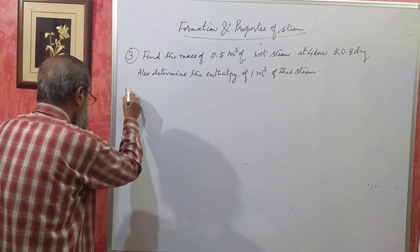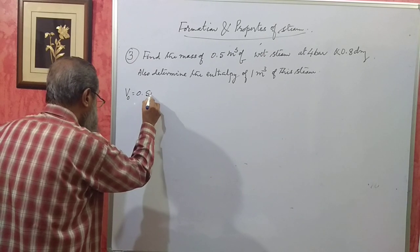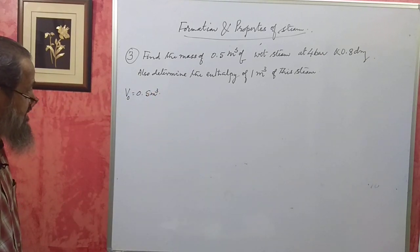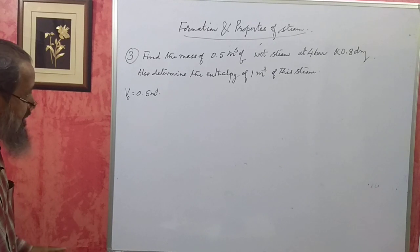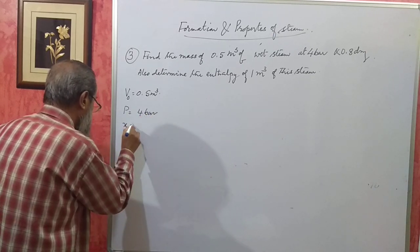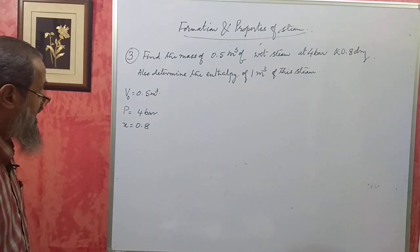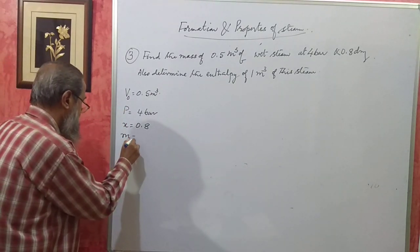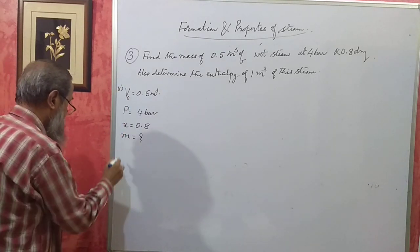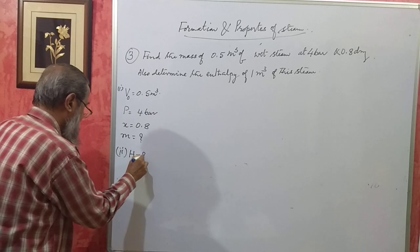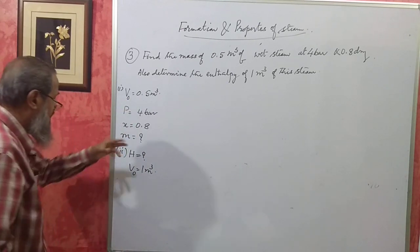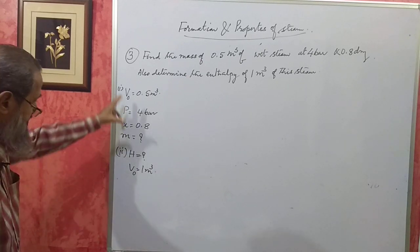Here they have given the volume: 0.5 cubic meters. This is the volume — we have a vessel of 0.5 cubic meters in which we have put the steam. It is occupying a space of 0.5 cubic meters. The pressure is 4 bar and its dryness fraction x is 0.8, so it is wet steam. We need to find the mass of this steam (first part), then the enthalpy of 1 cubic meter of this same steam (second part).